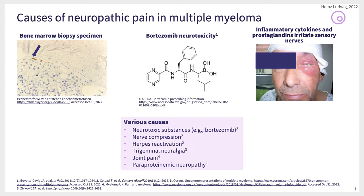Neuropathic pain is usually the consequence of myeloma therapy, but it can also be the consequence of herpes virus reactivation. This is a patient of mine who had been treated with bortezomib and panobinostat and was prophylaxed with acyclovir. In spite of that, he developed ocular herpes zoster, which was quite painful for several months. On this slide, you see a bone marrow biopsy specimen with nerve fibers shown in brown. Here you understand why myeloma infiltration in the bone may cause pain without osteolytic lesion, because inflammatory cytokines may be overproduced and irritate small nerve fibers.